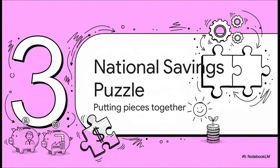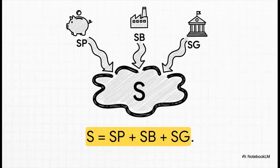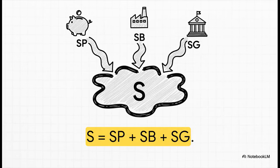So now we have two important pieces of our puzzle: savings from regular people and savings from companies. Let's add the third and final piece — the government — and see what the complete picture of a nation's total savings looks like. National savings is simply what you get when you add up all the savings in the entire country: private savings plus business savings plus government savings. If the government spends more than it brings in through taxes, its savings is actually negative — we call that dissaving, or running a deficit. Add all three together and you get S, the total national savings.